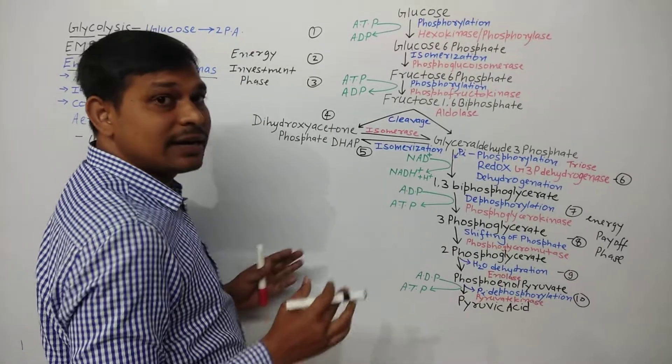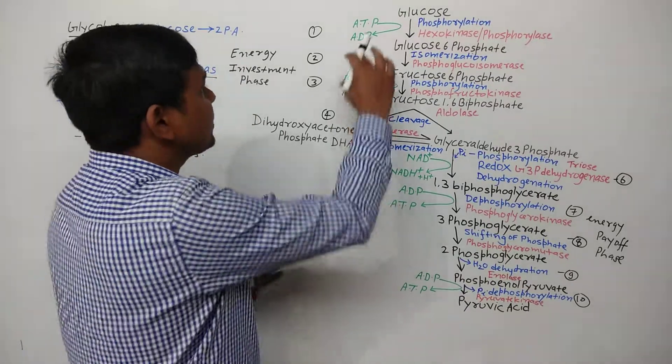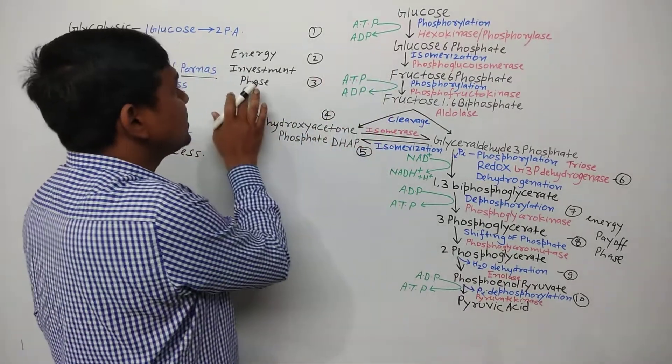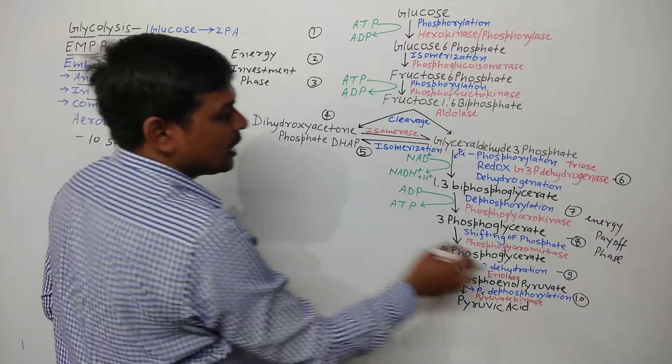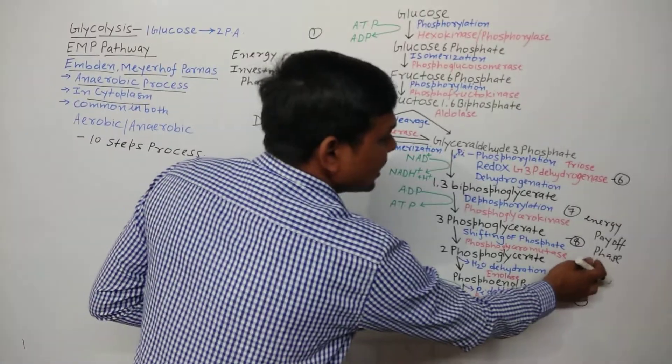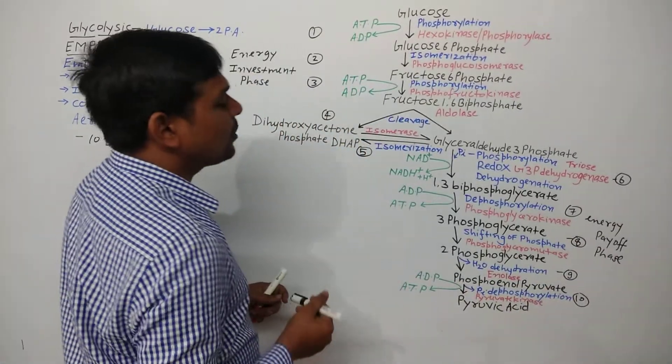So glycolysis is a 10-step process. The first 5 steps constitute the energy investment phase and the last 5 steps constitute the energy payoff phase.